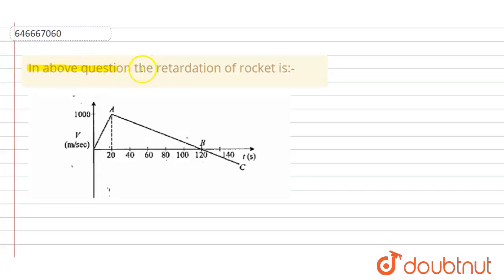In above question, the retardation of rocket is. Now this is a graph given and we have to find the retardation.